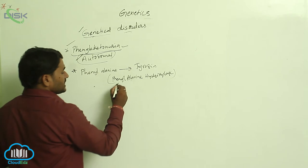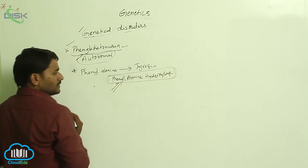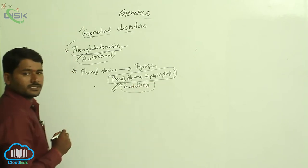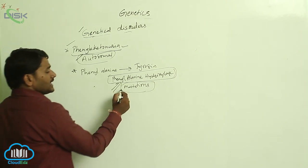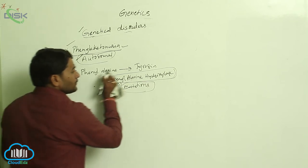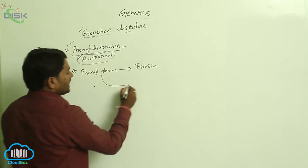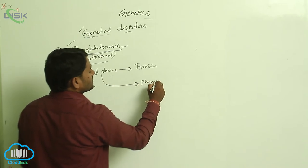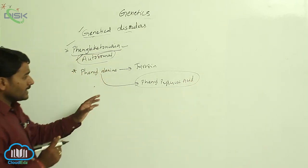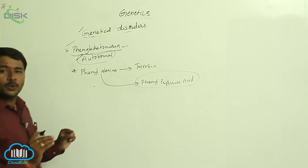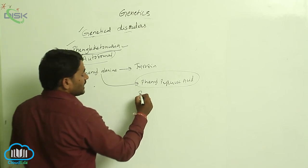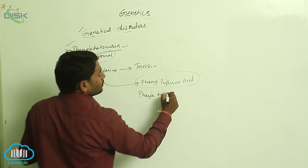The gene responsible for phenylalanine hydroxylase enzyme undergoes mutations. When the gene undergoes mutation, phenylalanine hydroxylase enzyme is not produced. In the absence of phenylalanine hydroxylase enzyme, phenylalanine is converted into phenylpyruvic acid. The accumulation of phenylpyruvic acid is called phenylketonuria.